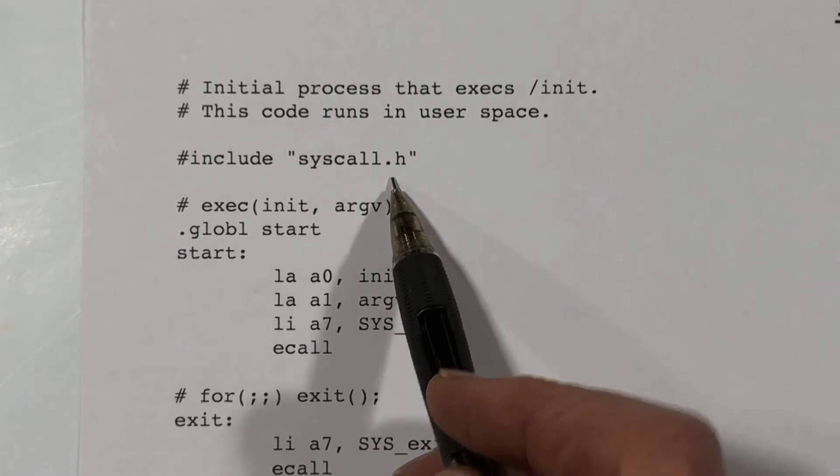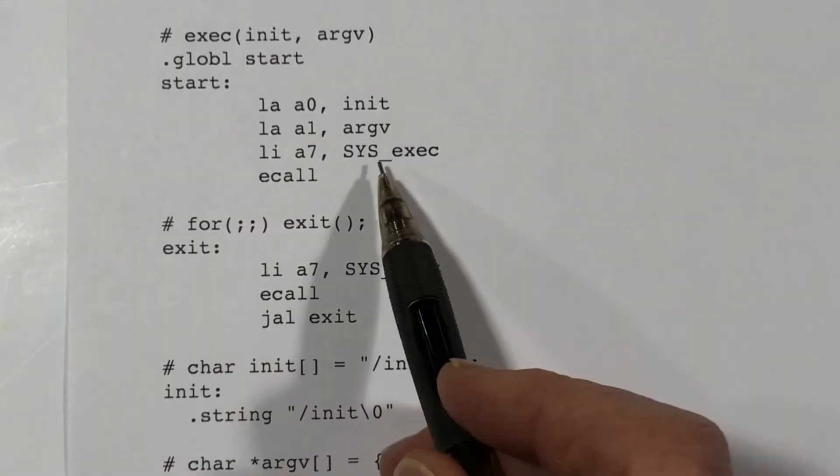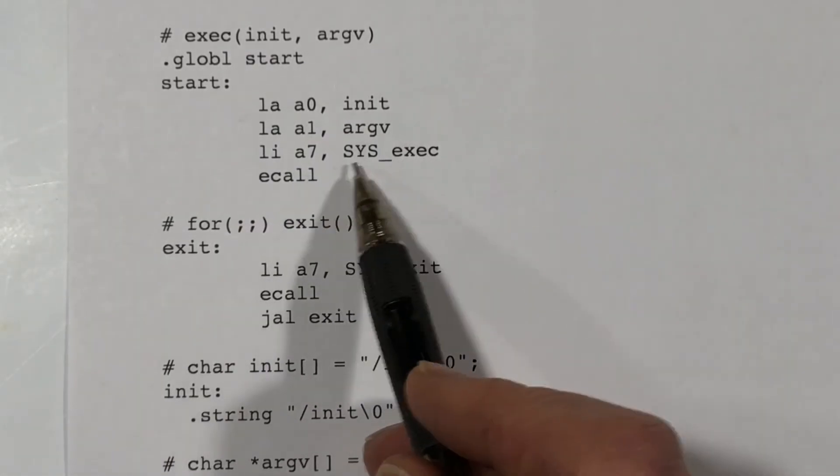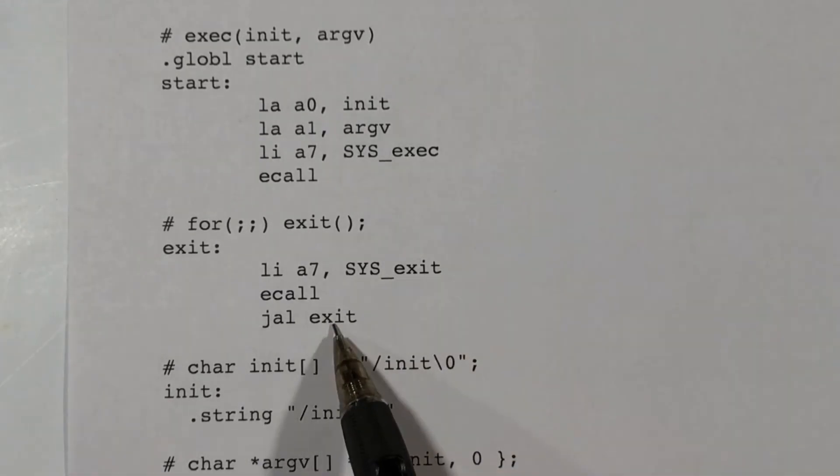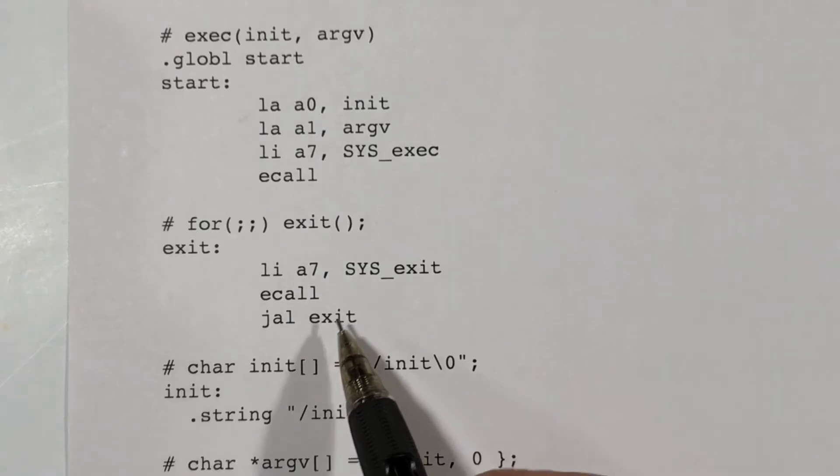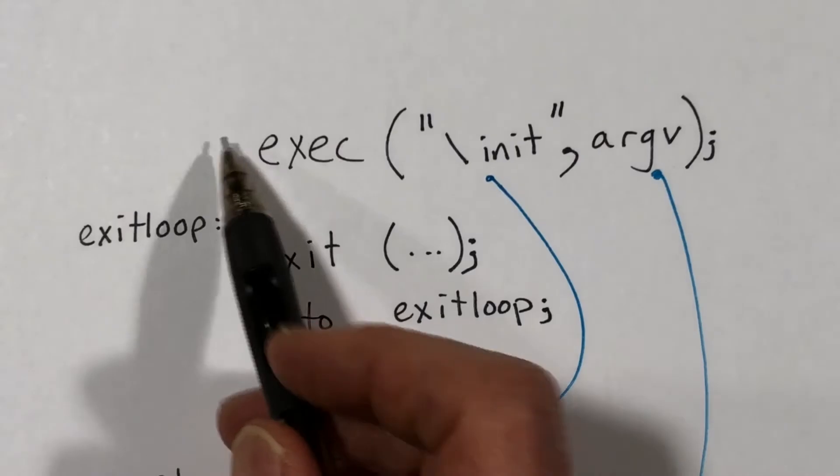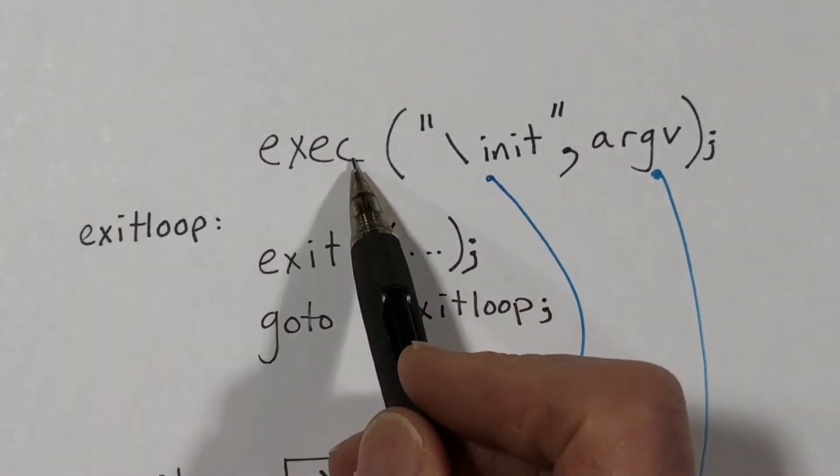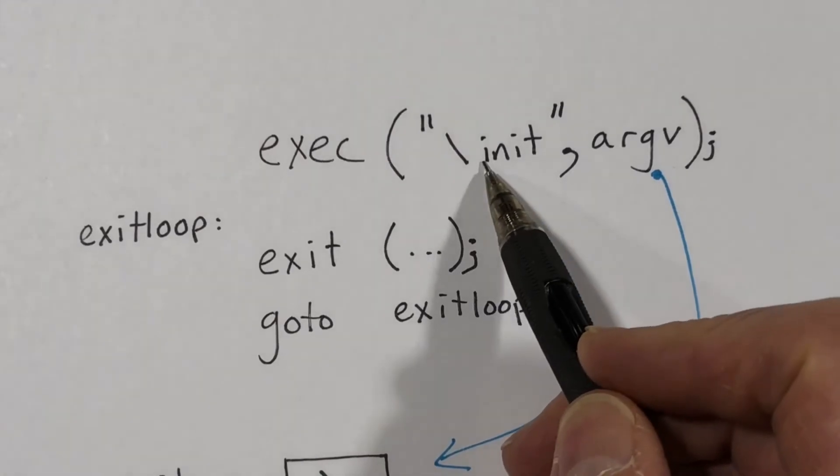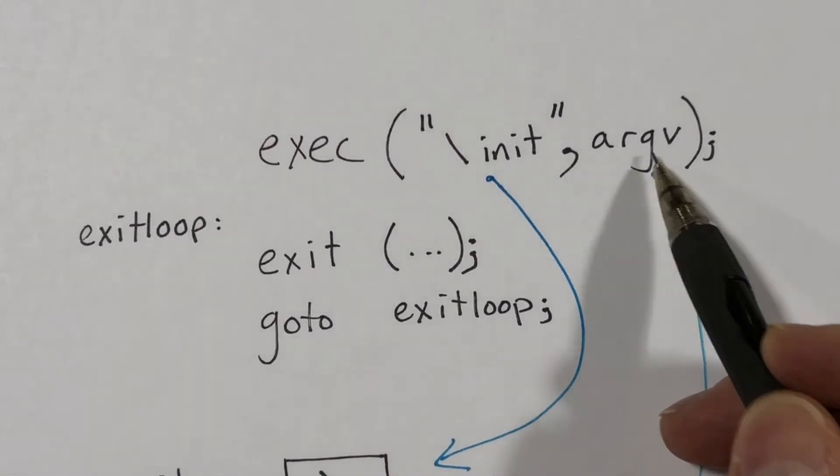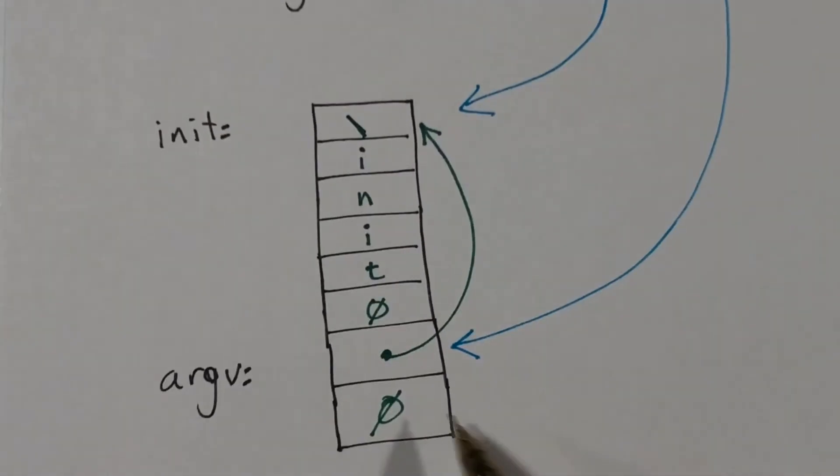And here we see the code for this program. It's pretty short. It includes syscall.h. So, in fact, we make a couple system calls here. We call the exec system call and the exit system call. Now, what does this little program do? I've tried to show it in this form here. It simply calls the exec system call, passing a pointer to the file name and a pointer to an array, and the array contains two elements.